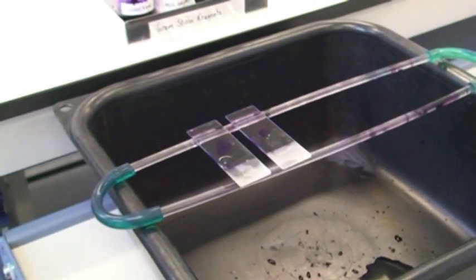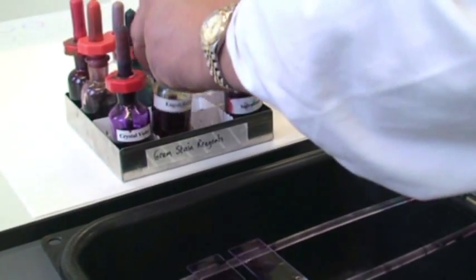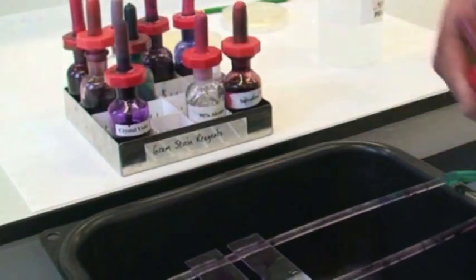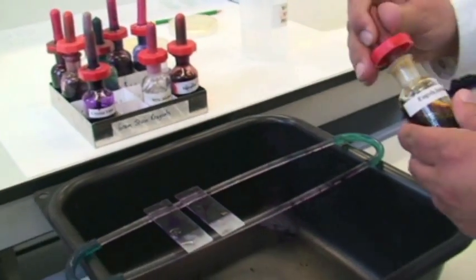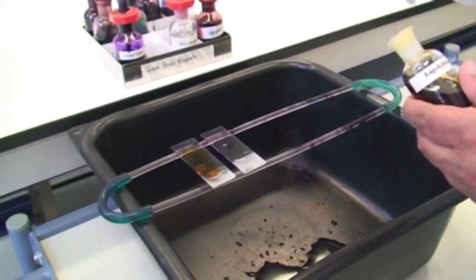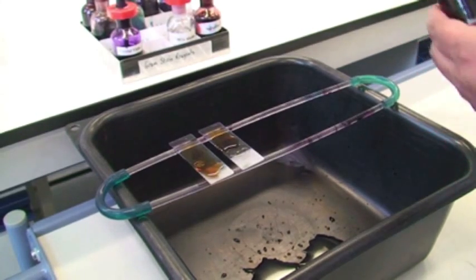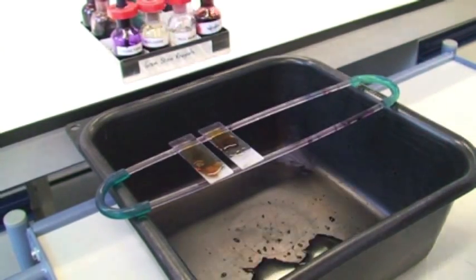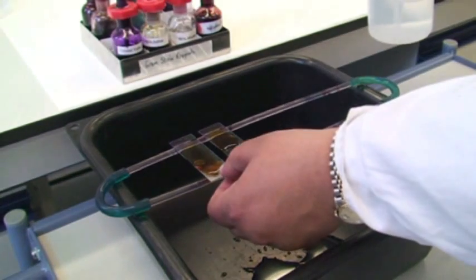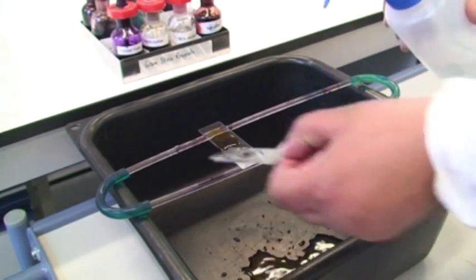The next stage is adding your Lugol's iodine. And again, similarly, it's not crucial how long you leave it on for, but making sure that you cover the area where the bacteria are on the slide. And again, washing off with your tap water in the bowl.